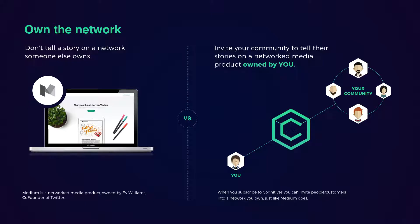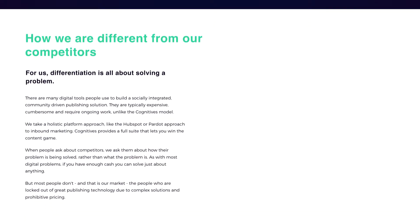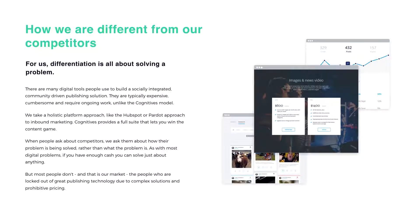Consumers get to decide their own content experience, and media consumers have been trained to expect this from social media. The more that traditional media companies can reflect that user experience, the more effective they'll be. We built that into the platform — it's a new way of creating and distributing content to your audience, giving them more power over what they consume. Big examples include Medium and Tumblr.